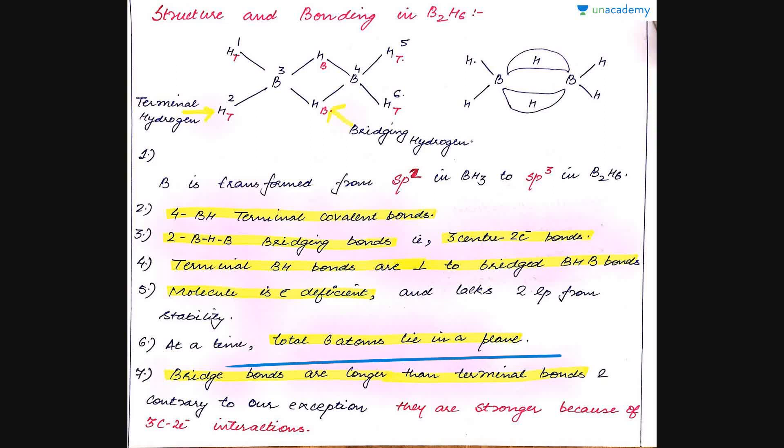Next feature is that the terminal BH bonds are perpendicular to the bridged BHB bonds, as a result of which only six atoms lie in a plane at a time. These atoms lie in one plane, whereas the BHB bond will be perpendicular to the terminal bonds. Next is the molecule is electron deficient and lacks two lone pairs from stability. Bridging bonds are longer than the terminal bonds. Usually, as there are three-center two-electron bonds, it is contrary to our expectation that these are stronger. In actual, the bond has to be weaker and weaker bonds are always longer, so the bridge bonds are longer than the terminal bonds.